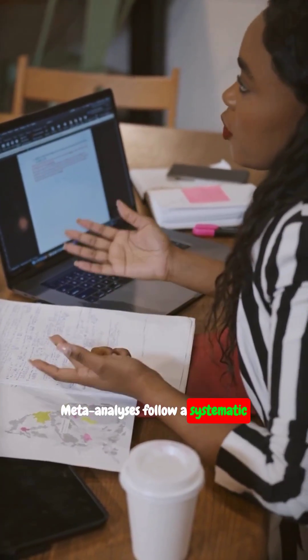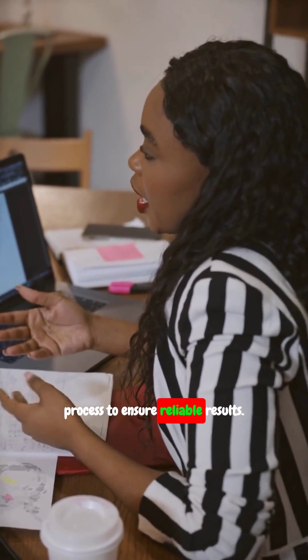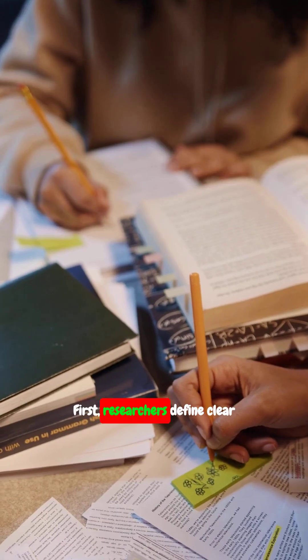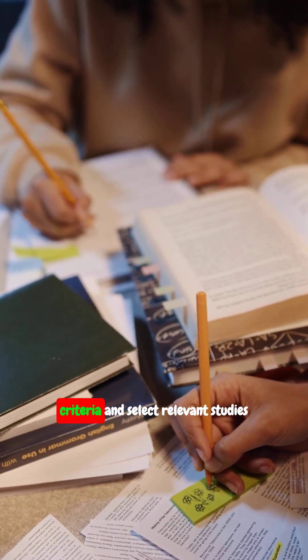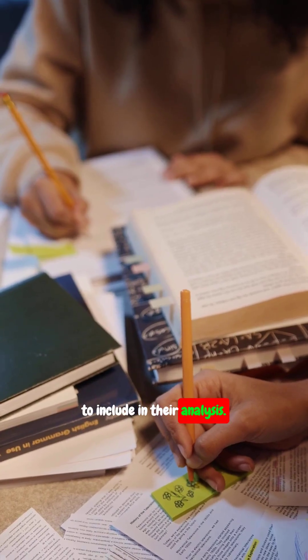Meta-analysis follows a systematic process to ensure reliable results. First, researchers define clear criteria and select relevant studies to include in their analysis.